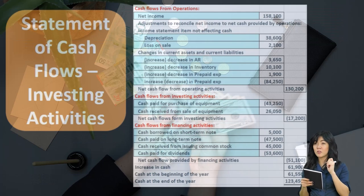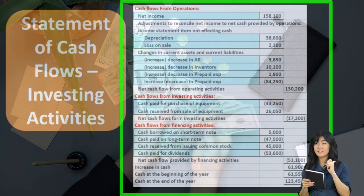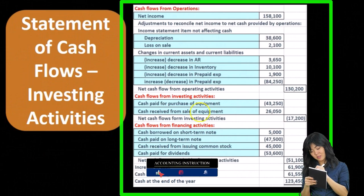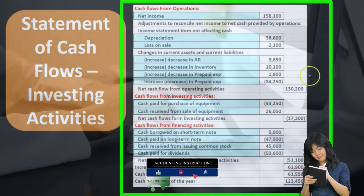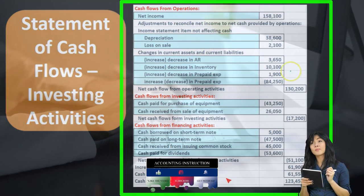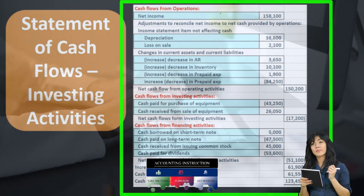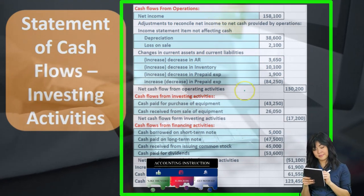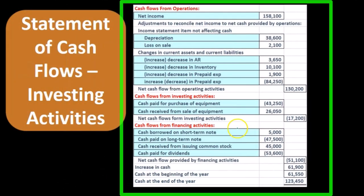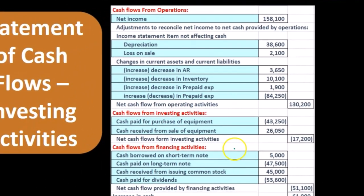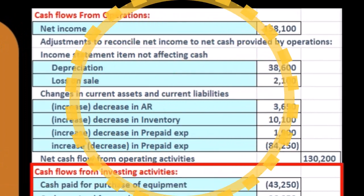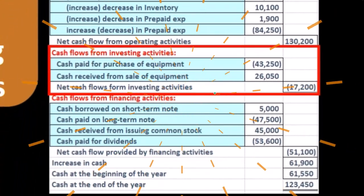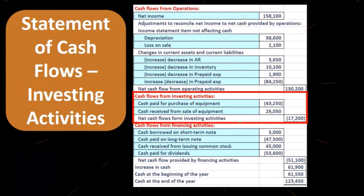When considering investing activities, we are looking at them in terms of the statement of cash flows — this being a worksheet related to a statement of cash flows form having three parts: cash flows from operating activities, cash flows from investing activities, and cash flows from financing activities. We are focusing here on cash flows from investing activities. Note that there are two methods we could use for the statement of cash flows: a direct method and an indirect method.